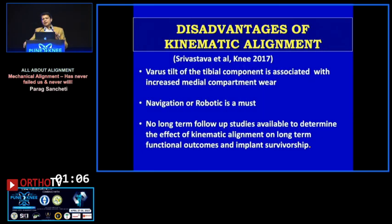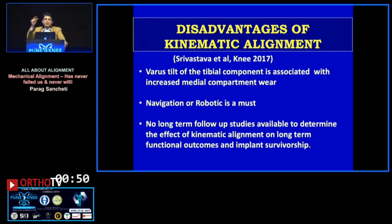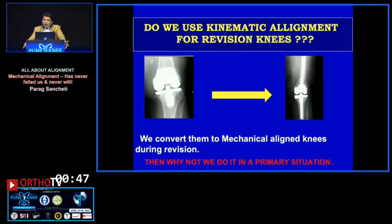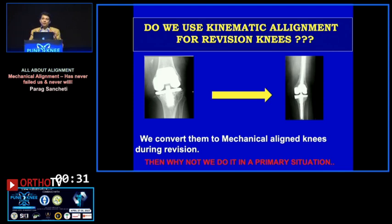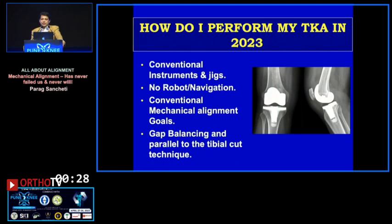There are also enough finite element studies showing that in a poorly aligned, non-neutrally aligned knee, the cement and polyethylene fail early. One of my biggest problems with kinematic alignment is: how do you reproducibly achieve three degrees of varus without tools like a robot or navigation? Freehand is very difficult. Furthermore, nobody talks about kinematic alignment in revision knees — everyone wants to cut at 90 degrees there. So why not apply the same logic to primary knees?